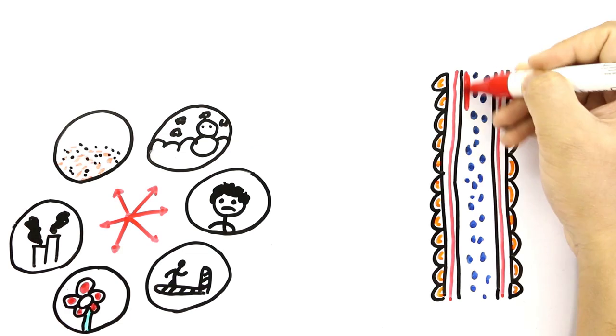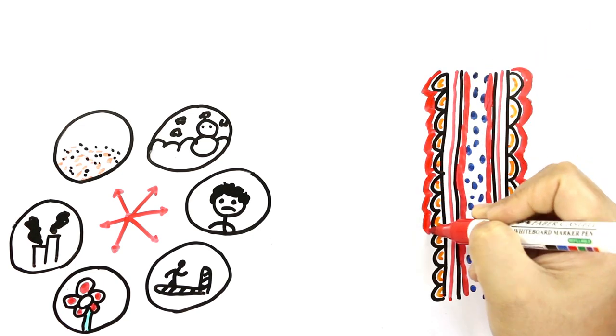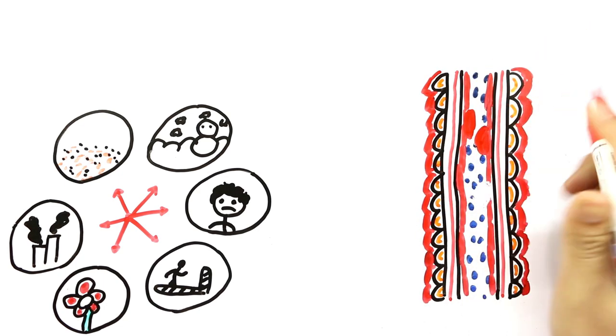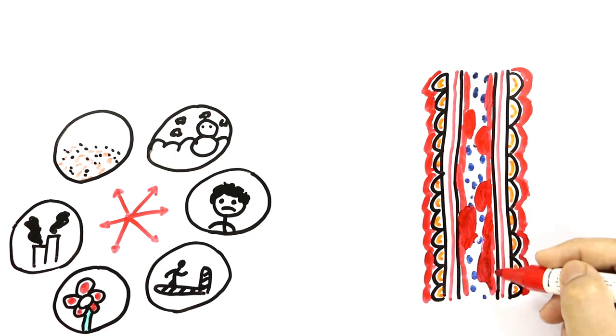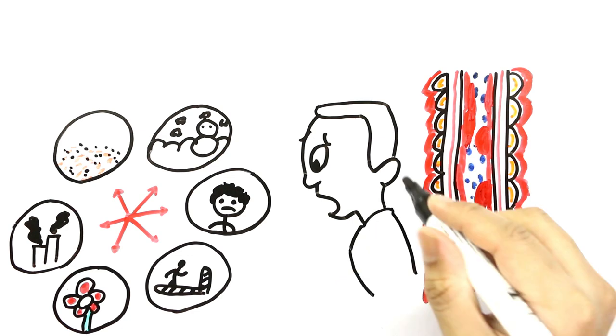When an asthma attack occurs, the smooth muscles surrounding mucosa contract. At the same time, the mucosa lining becomes swollen and the passage gets blocked, thereby making it difficult for the air to pass. It is due to this reason that a person feels breathless.